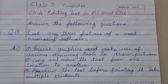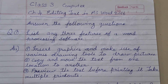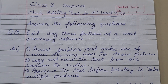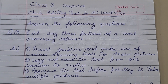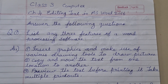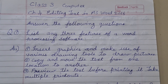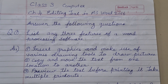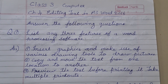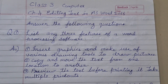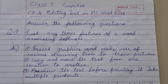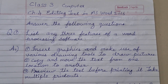Answer the following questions from chapter 4. First question: List any three features of a word processing software. Answer — First: Insert graphics and make use of various drawing tools to draw pictures. Second: Copy and move the text from one location to another. Third: Review the text before printing it and take multiple printouts.